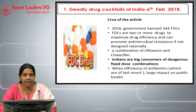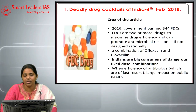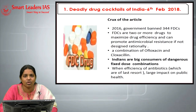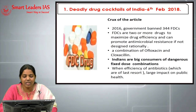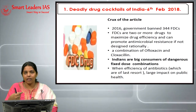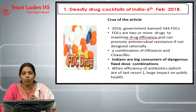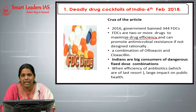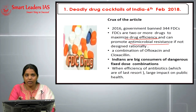The main crux of the article: in 2016, the government banned around 344 fixed drug combinations. Pharma companies went to court, arguing the government action was hasty and illogical, but the Supreme Court sided with the government. FDC is nothing but two or more drugs combined to maximize drug efficiency — one component for a condition, another to remove side effects. If not used rationally, it can promote antimicrobial resistance.